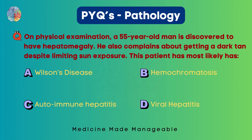On physical examination, a 55-year-old man is discovered to have hepatomegaly. He also complains about getting a dark tan despite limiting sun exposure. The patient most likely has Wilson's disease, hemochromatosis, autoimmune hepatitis, or viral hepatitis. The two most important things to look for are hepatomegaly and dark tan. Limiting sun exposure means the tan is not from the sun — it is probably due to some disease.